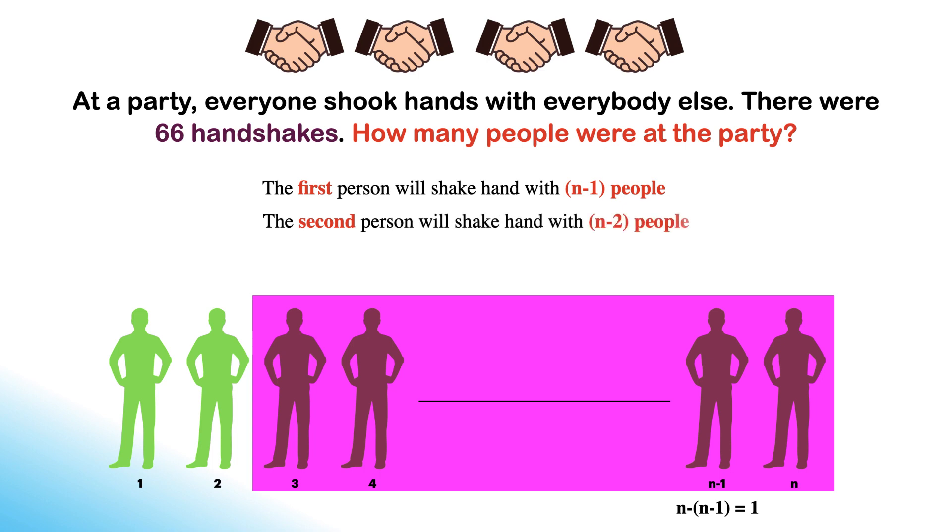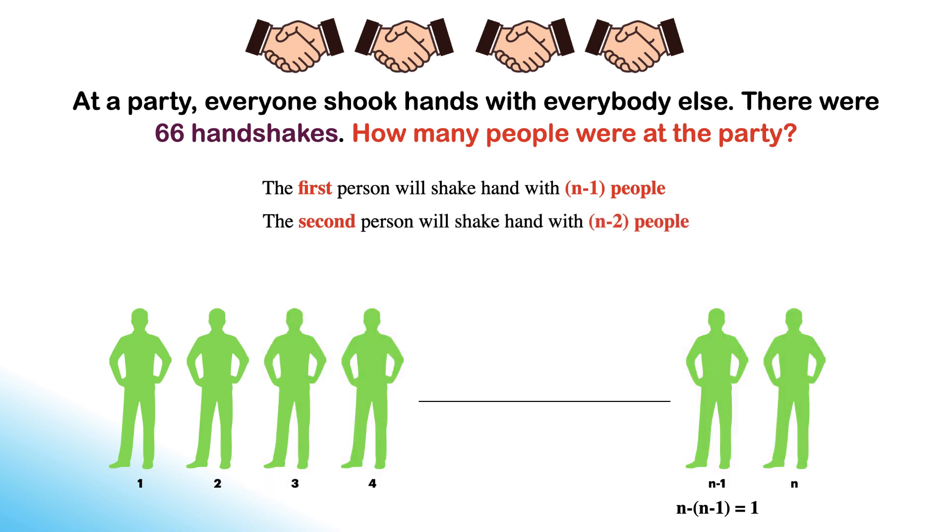The second person will shake hand with n minus 2 people. The third person will shake hand with n minus 3 people. In this way, the n minus 1th person, that is the last but one person, will shake hand with n minus n minus 1, which is equal to 1 person, that is the last person.